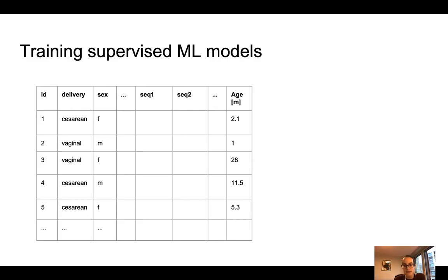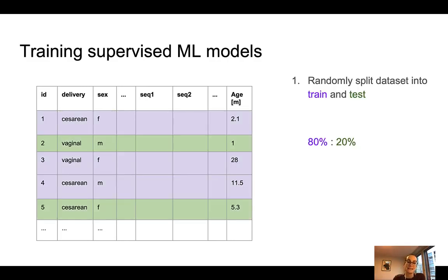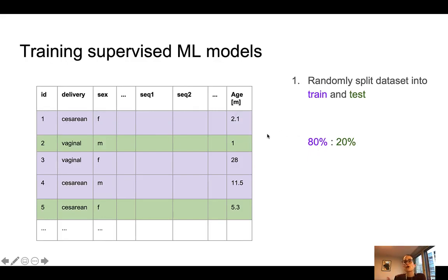Starting off with this dataset, we can then split it into a train and a test set prior to training our model. This is a very important step because we want to ensure that the samples which we fit our model to are different from the samples on which we evaluate our model. The fraction splits are usually performed in 80 to 20 percent, but you can choose whatever fits your use case best. There are also more complicated ways of splitting your data, such as cross-validation or nested cross-validation — just have a look online for more information.